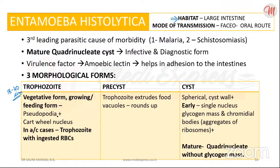The trophozoite has pseudopodia — long finger-like projections of the ectoplasm into which the endoplasm flows. It also has a cartwheel nucleus, which is a speciality of the trophozoite. In acute cases, we can see trophozoites with ingested RBCs.